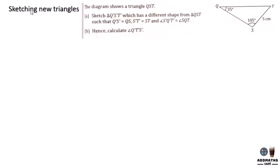Now this is the most important part of this chapter: sketch a new triangle. So this is a triangle we have, let me draw it down. So I have QST here, 5cm, this is 105 degrees and 35 degrees over here. The diagram shows a triangle QST.